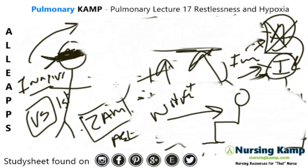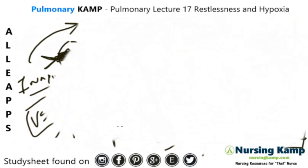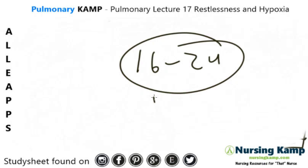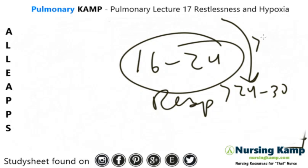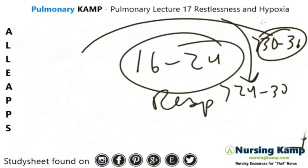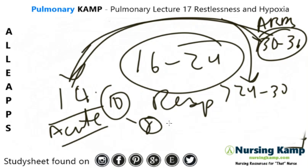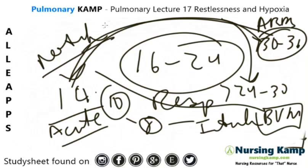Restlessness is critical — never ignore it, because restlessness and tachycardia happen before the patient decompensates. Normal respirations are 16–24. Once respirations go above 24, restlessness begins. At 30, they start to get tired. Greater than 30, the patient is in distress — that's acute respiratory distress. If respirations then drop rapidly, say from 32 down to 14, that patient is decompensating. At 10, they're definitely acute. At 8, it's time to intubate; that patient needs a bag valve mask. At that point, notify the doctor, because the patient is no longer maintaining oxygen saturations.